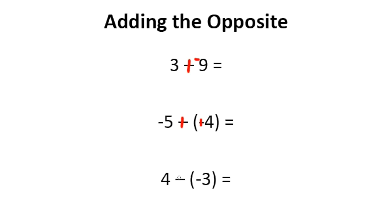So last one, 4 minus a negative 3. First thing we need to do is add. Opposite of a negative 3 is a positive 3. Now we have 4 plus a positive 3.